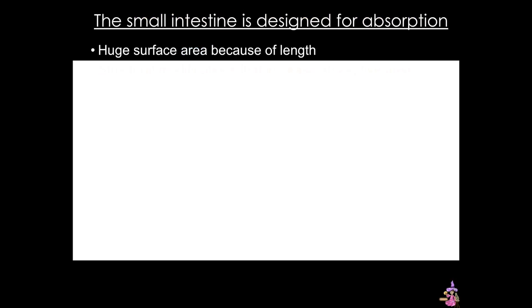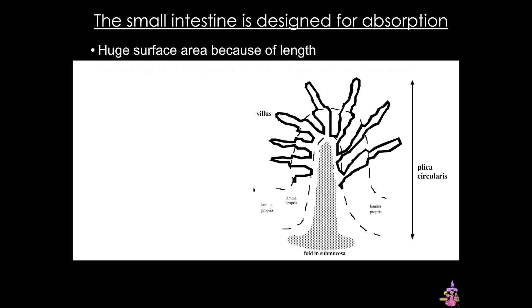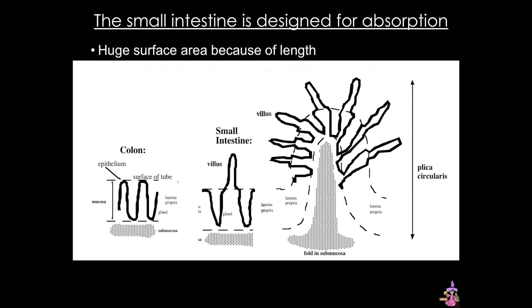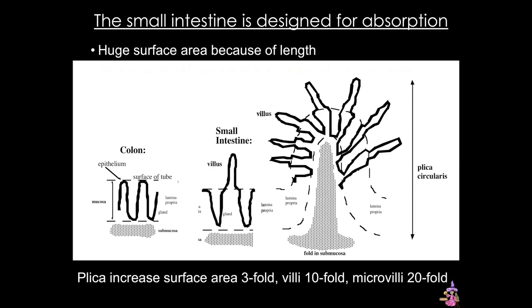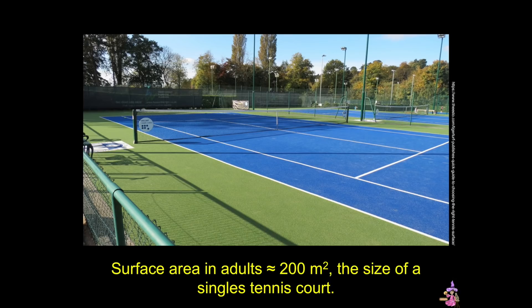Unlike a hose, the small intestine has special features that increase the surface area for absorption. There are three key features: first, the plica circulare; next, the villi; and finally, microvilli on the apical surface of the intestinal epithelial cells, or enterocytes. The plica increase surface area about 3-fold, the villi about 10-fold, and the microvilli about 20-fold. Altogether, these modifications make the total surface area about 200 meters squared — roughly the size of a tennis court.